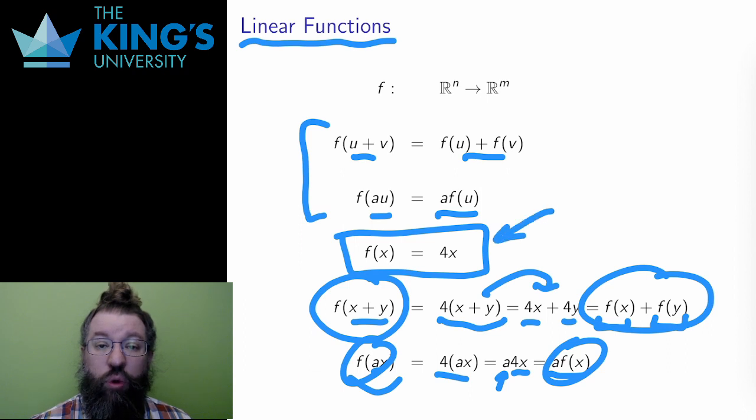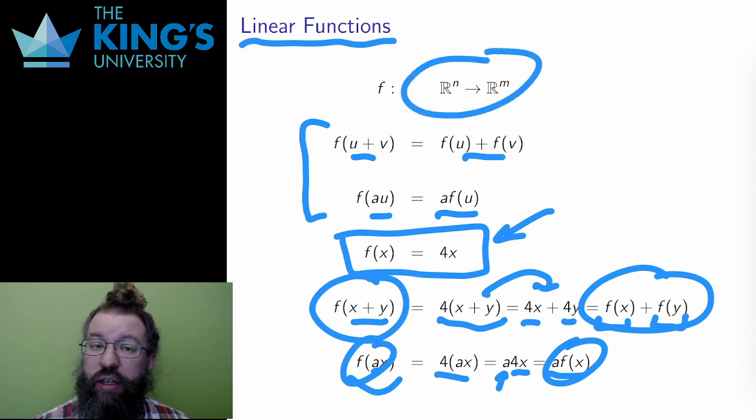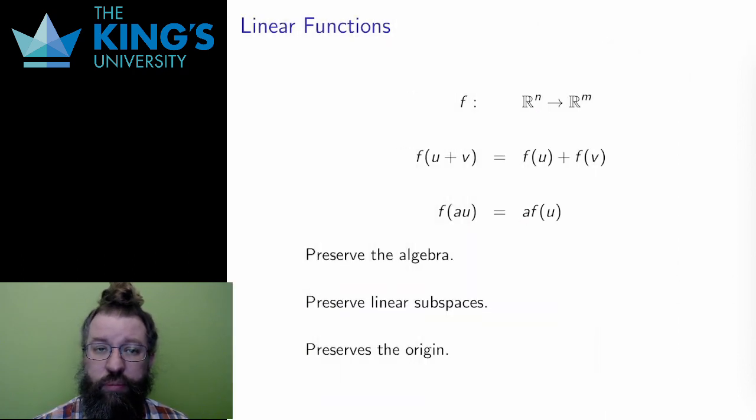This multiplication by 4 is a linear function of a number. What I've defined is functions of vectors, but the pattern here is quite similar. Here are those rules again. So let me rephrase what is happening here. Since the operations, addition, scalar multiplication, can happen either before or after the function, mathematicians say that the function preserves the operation, or similarly, it preserves the algebra.